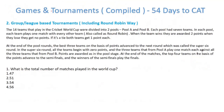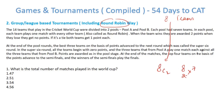Let's move forward and understand what happens in a league-based round robin tournament. In round robin, if there are n teams and every team plays every other team, the number of matches will be nC2. For example, with 8 teams, the number of matches is 8C2, which is 8 divided by 2 times 7, equaling 28.